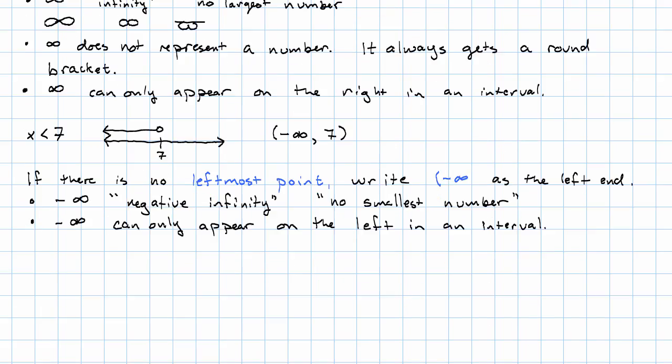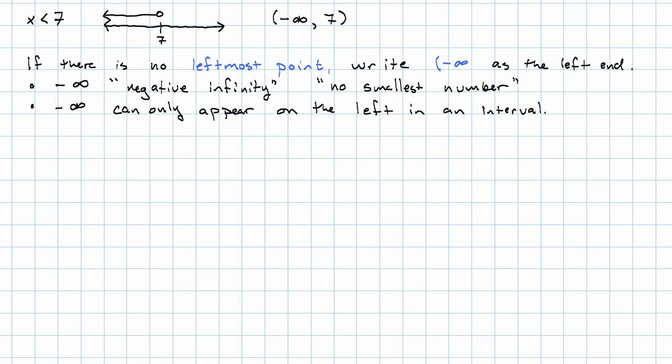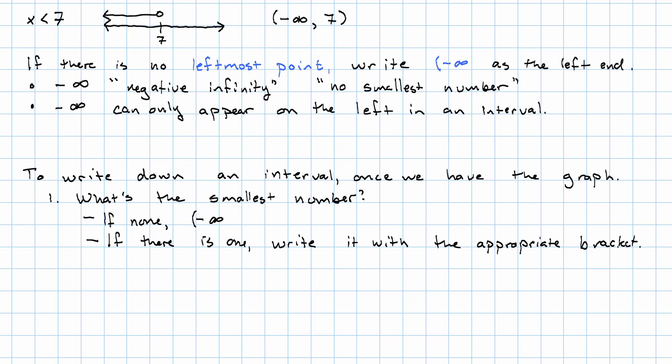So, we have a process, then, for writing down an interval once we have the graph. We ask, what's the smallest number graphed here? If there is no smallest number, we write negative infinity with a round bracket. If there is a smallest number, we write it with the appropriate bracket. Round for an empty dot, square for a filled dot.